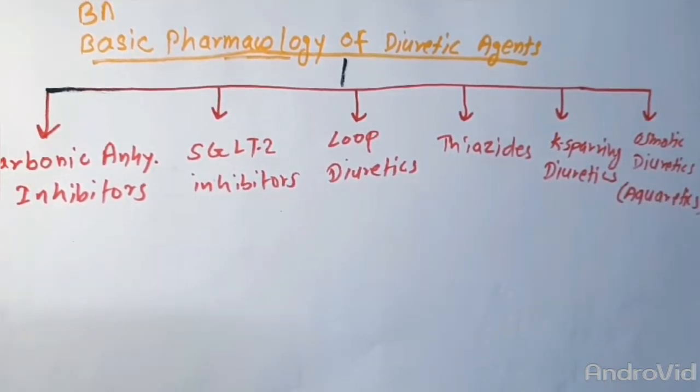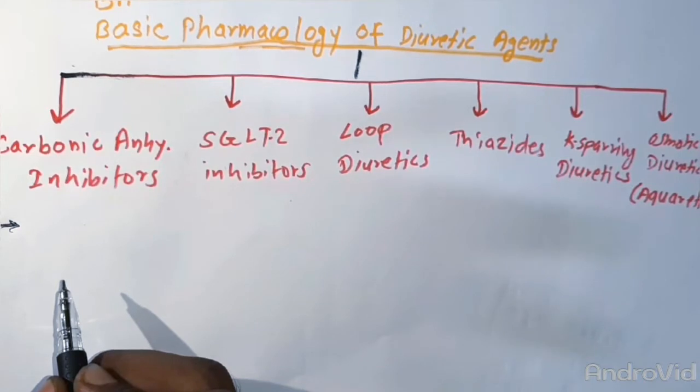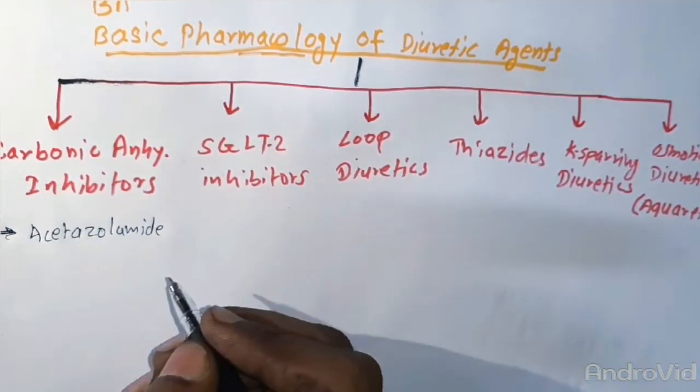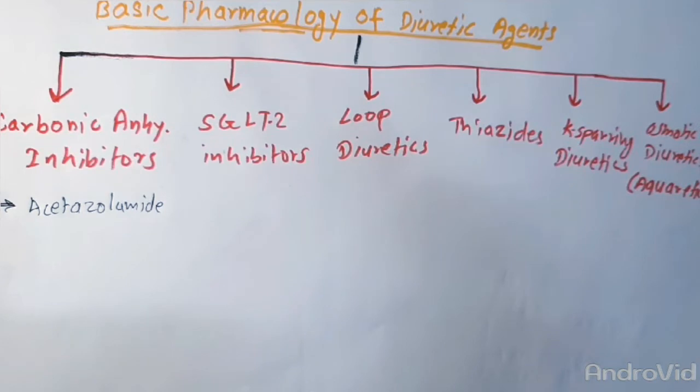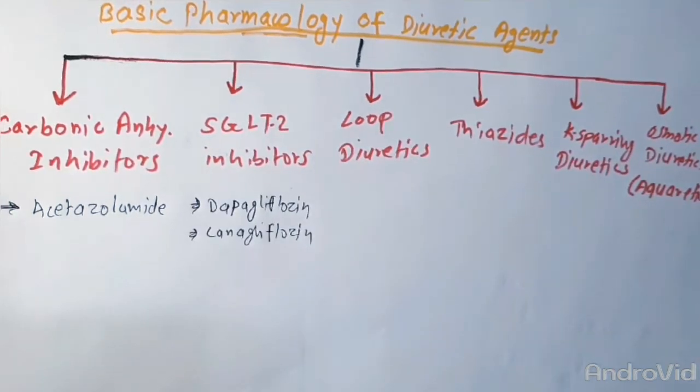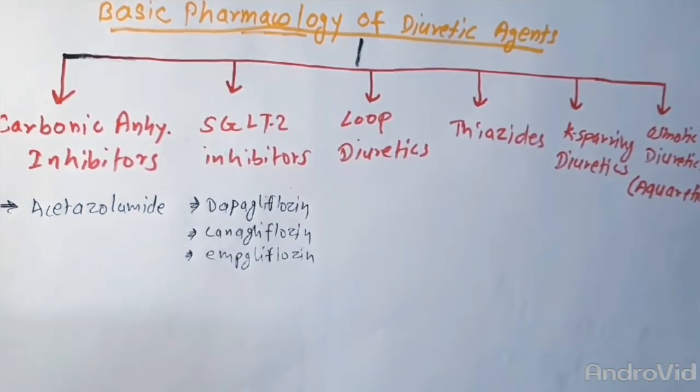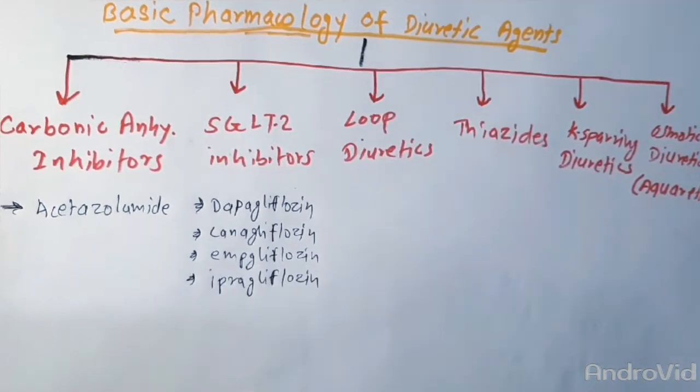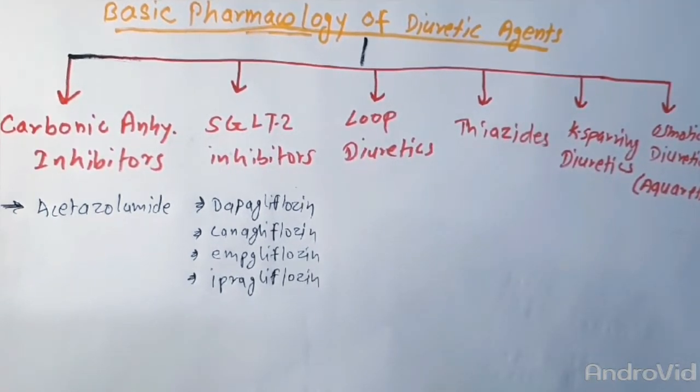The prototypical CA inhibitor is acetazolamide. The SGLT2 inhibitors include dapagliflozin, canagliflozin, empagliflozin, and ipragliflozin. We can memorize these drugs with the mnemonic DESI drugs.